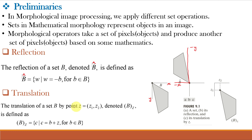Similarly, translation of a set by point Z, which equals (Z1, Z2), denoted by B(Z), is defined as: B(Z) equals the set of elements C such that C is formed by adding each element of B by Z, for all B belonging to capital B. That means we will be shifting all the elements by Z1 and Z2, and the resultant set will be the shifted version of B.